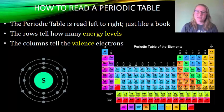The periodic table is read left to right just like a book and is your most useful tool when doing any kind of chemistry or biochemistry. Each row tells you about the number of energy levels for that particular type of element, and the columns tell you about the number of valence electrons.